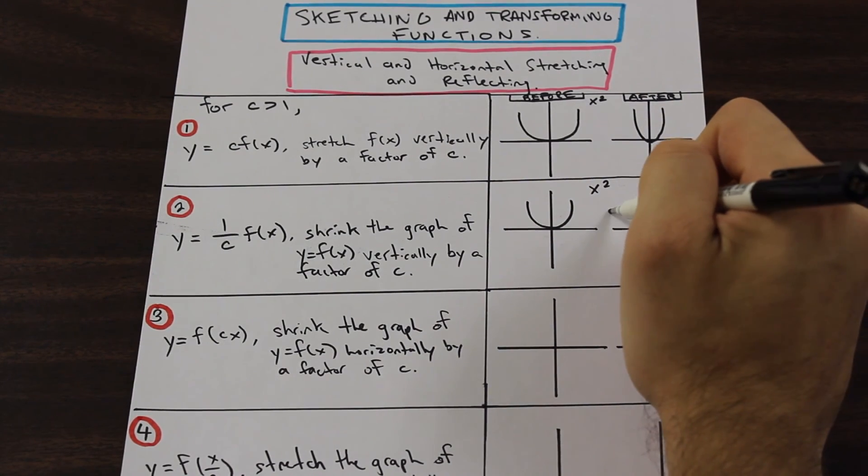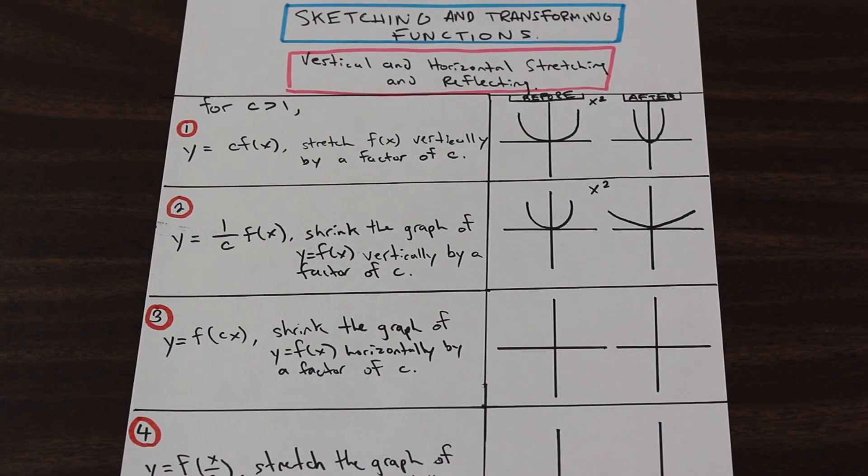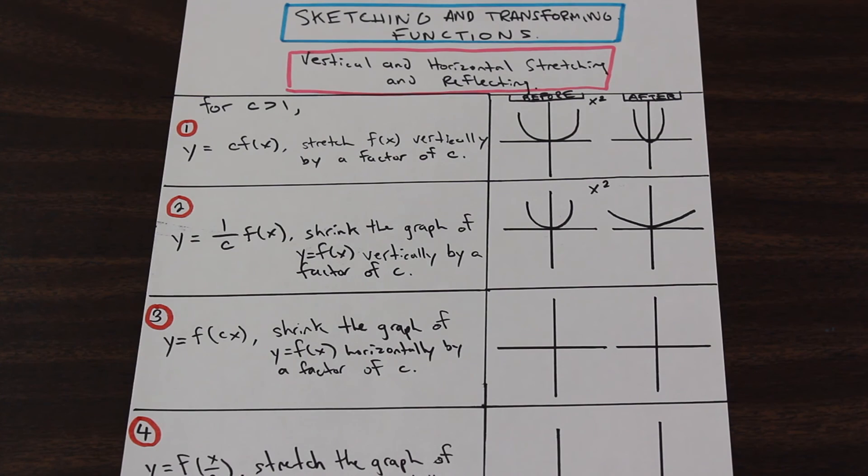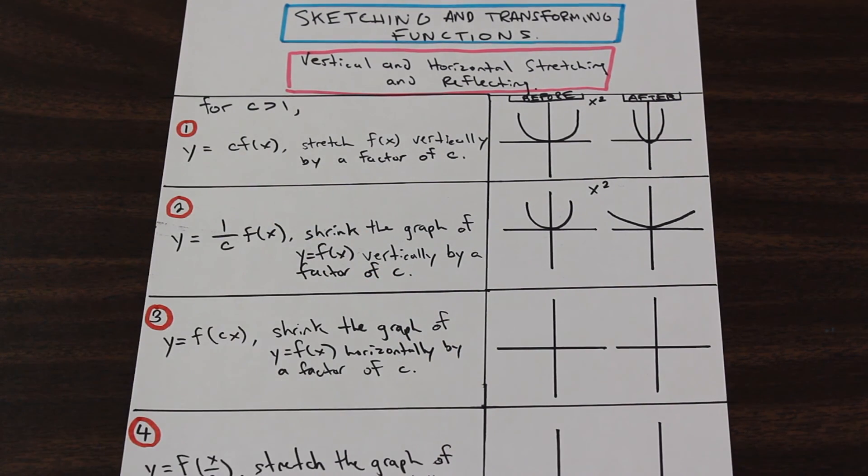What's going to happen is this function is going to stretch out this way. So that's maybe a good way, if you're having trouble remembering this, if you're not sure, just plug in a number. Plug in numbers and plot a couple points so you can remember it.